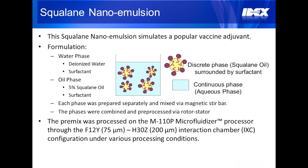Our collaboration with Pall began by choosing a robust formulation commonly found in industry. We chose a squalene nanoemulsion that represents a popular vaccine adjuvant. This formulation is made up of a water phase and an oil phase, each containing a surfactant. A pre-mix was created by combining both phases and mixing them with a rotor stator. This pre-mix was then processed on the M110P microfluidizer processor through the F12Y-H30Z interaction chamber configuration. The processing pressure and number of passes were varied, providing different particle size distributions.